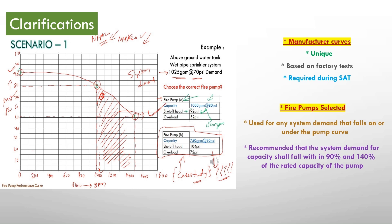However NFPA 20 recommends that the system demand for capacity shall fall within 90% and 140% of the rated capacity of the pump.